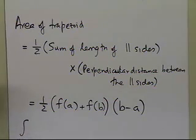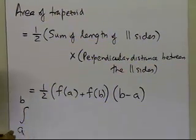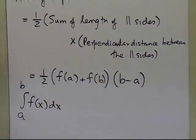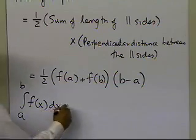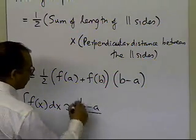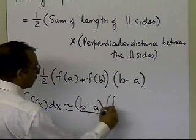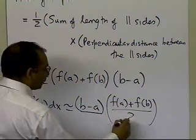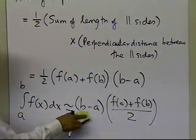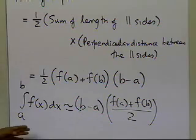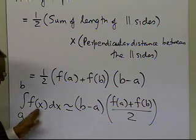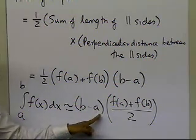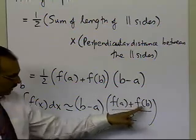So the trapezoidal rule formula is: the integral of f(x) from a to b is approximately equal to (b minus a) times (f(a) plus f(b)) divided by two. This is the approximate formula for the trapezoidal rule — it is b minus a, which is the width of the interval, times the average value of the function at a and b.